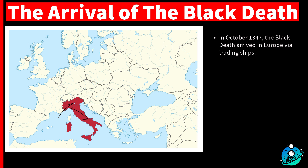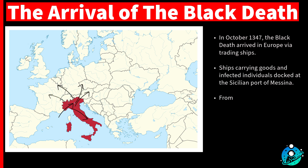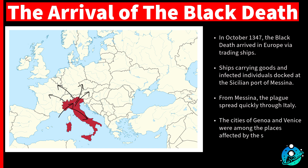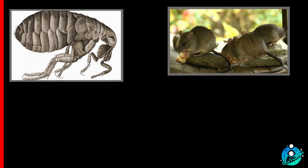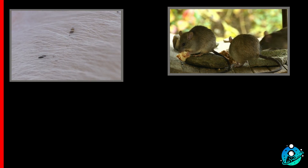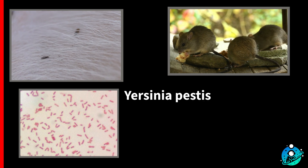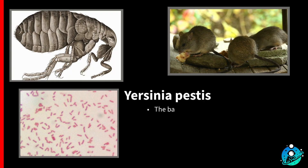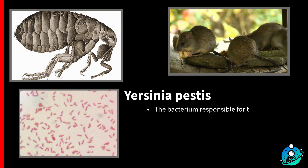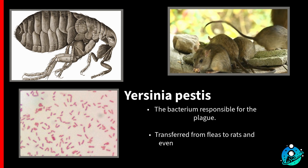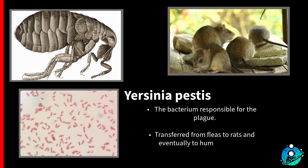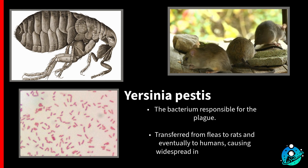From there, the plague spread quickly through Italy, including the cities of Genoa and Venice. The plague's rapid spread was facilitated by fleas and rats. Infected fleas would bite rats, transferring the bacterium Yersinia pestis, which then spread among the rat population. When infected rats died, the fleas would seek new hosts, including humans, thus spreading the disease further.